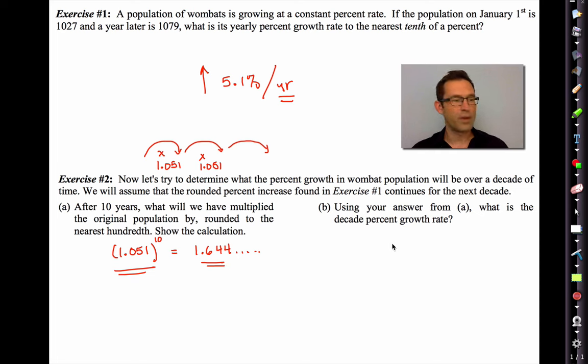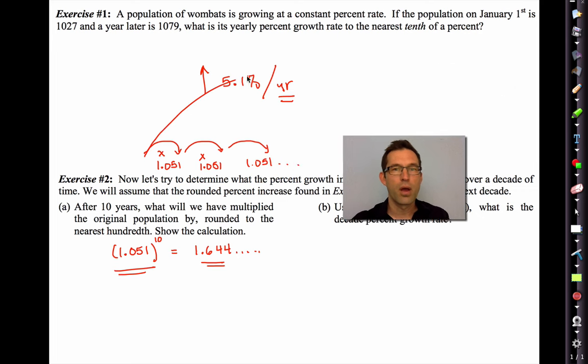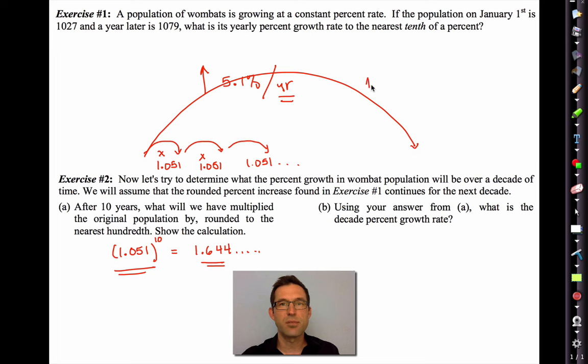Letter B says, using your answer from part A, what is the decade percent growth rate? Well, think about this. We multiply by 1.051, or we multiply just once by 1.644, et cetera, which is 1 plus 0.64, roughly. So we can say that our decade growth rate, rounded to the nearest percent, is 64%.